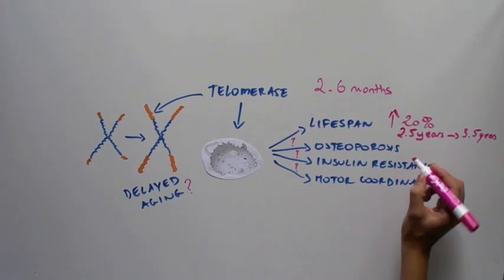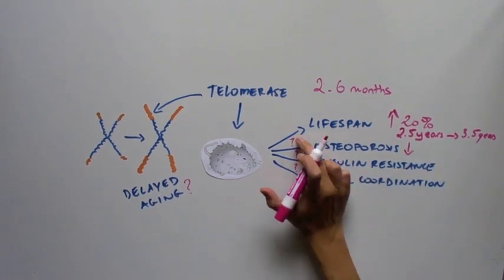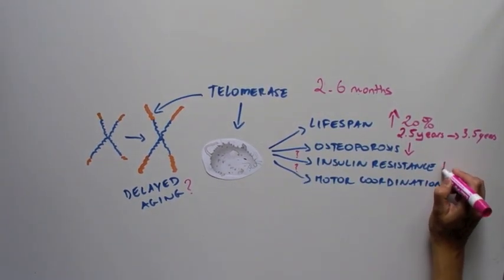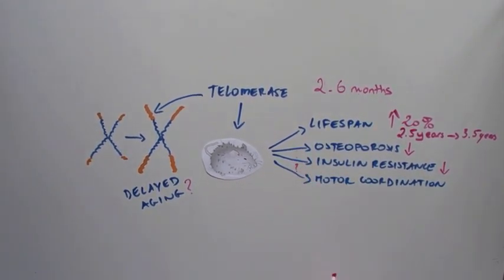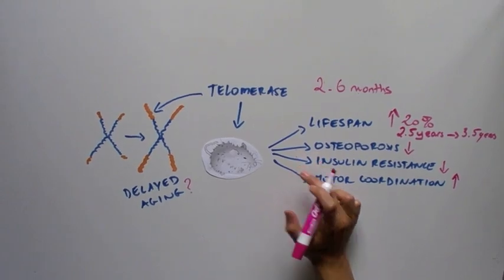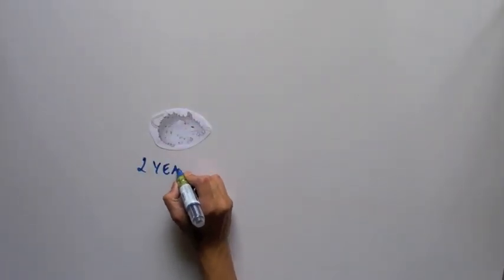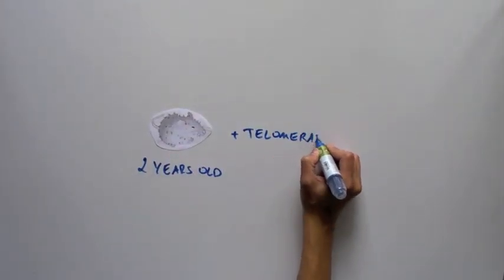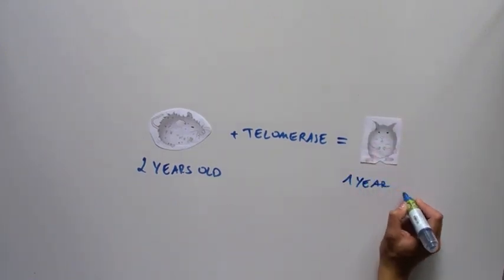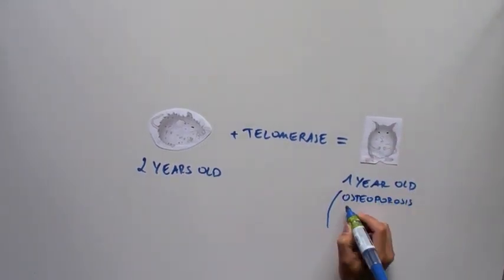But that's not all. Not only were the mice living longer, but they also had fewer age-related complications, such as osteoporosis and insulin resistance, which is the basis of type 2 diabetes. They had better coordination, balance, and neuromuscular coordination. Essentially, 2-year-old mice that were given telomerase for 6 months now looked almost identical to 1-year-old mice for the parameters that were tested.